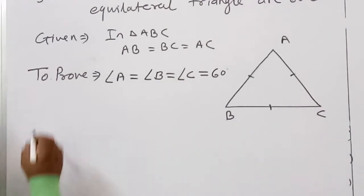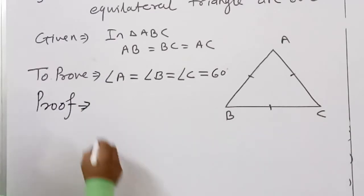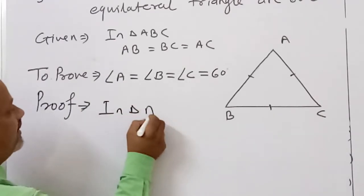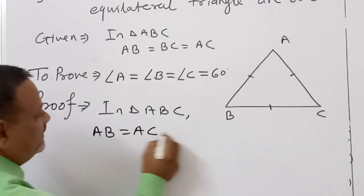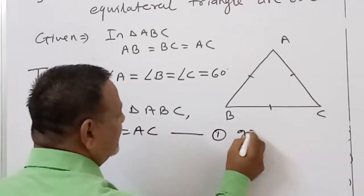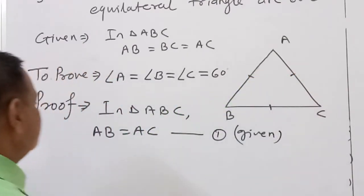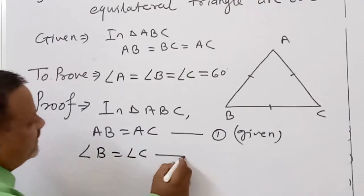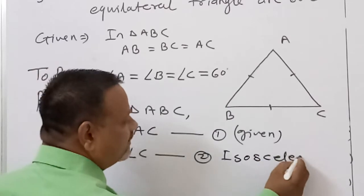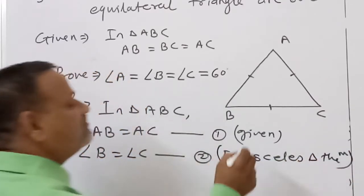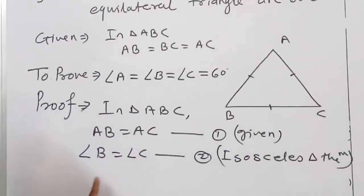So here we start the proof. In triangle ABC, AB equals AC is given — equation 1. Since AB equals AC, by the isosceles triangle theorem, angle B equals angle C — equation number 2. Because if two sides are equal, the angles opposite to them are equal.